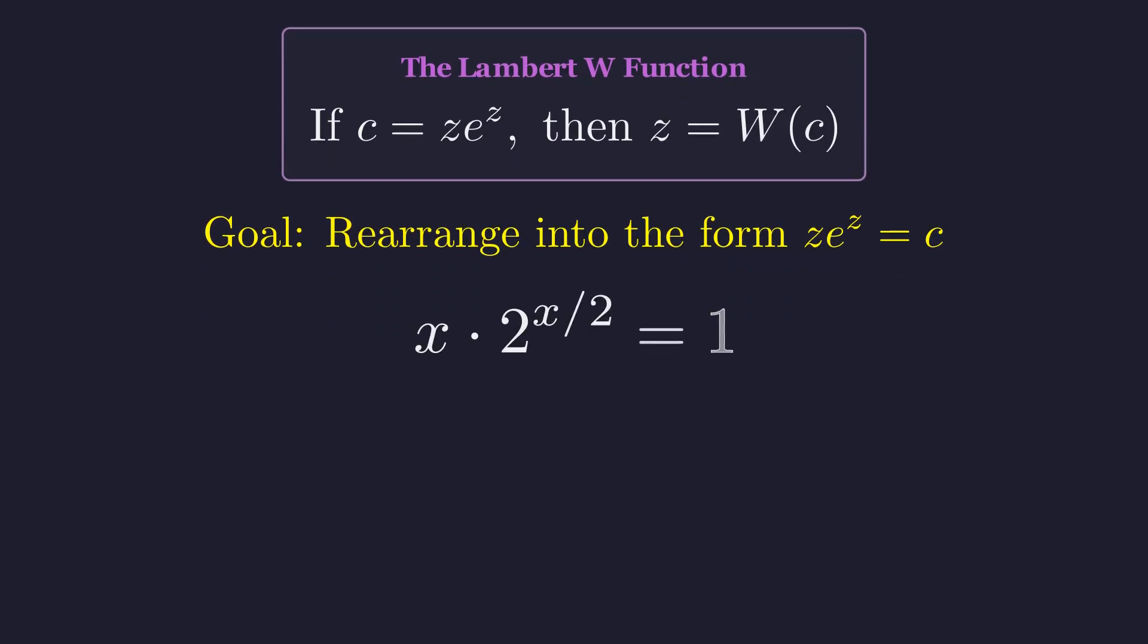First, we multiply both sides by 2 to the power of x over 2. The Lambert function uses base e, so we must convert our base of 2 by writing it as e to the power of the natural log of 2. Substituting this identity is the key step.